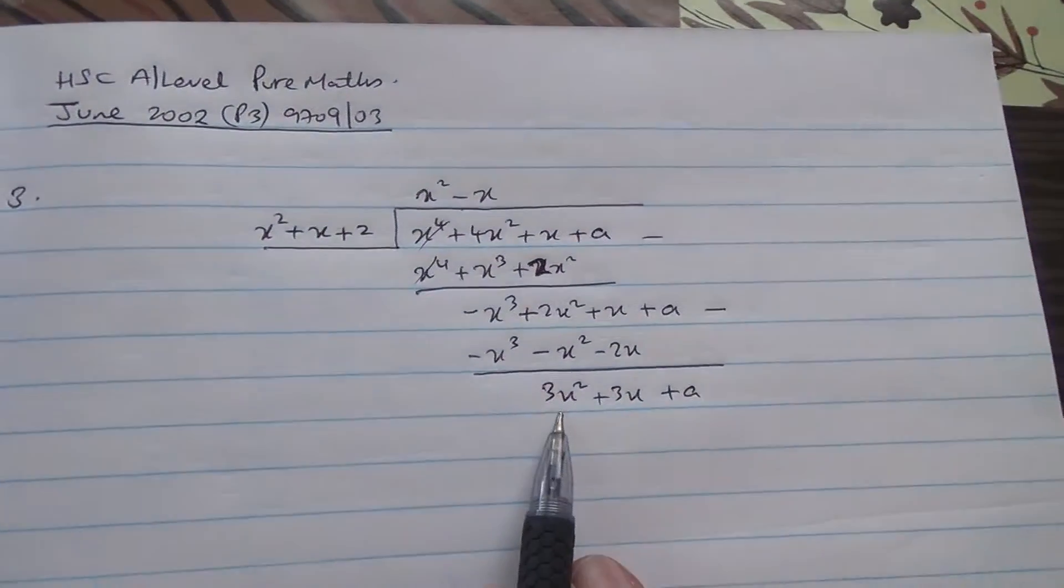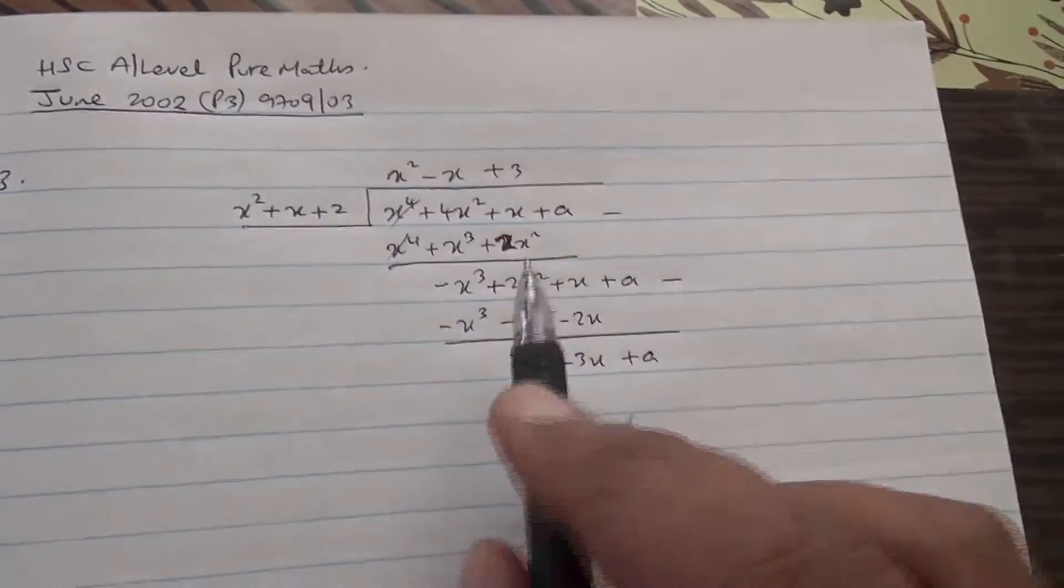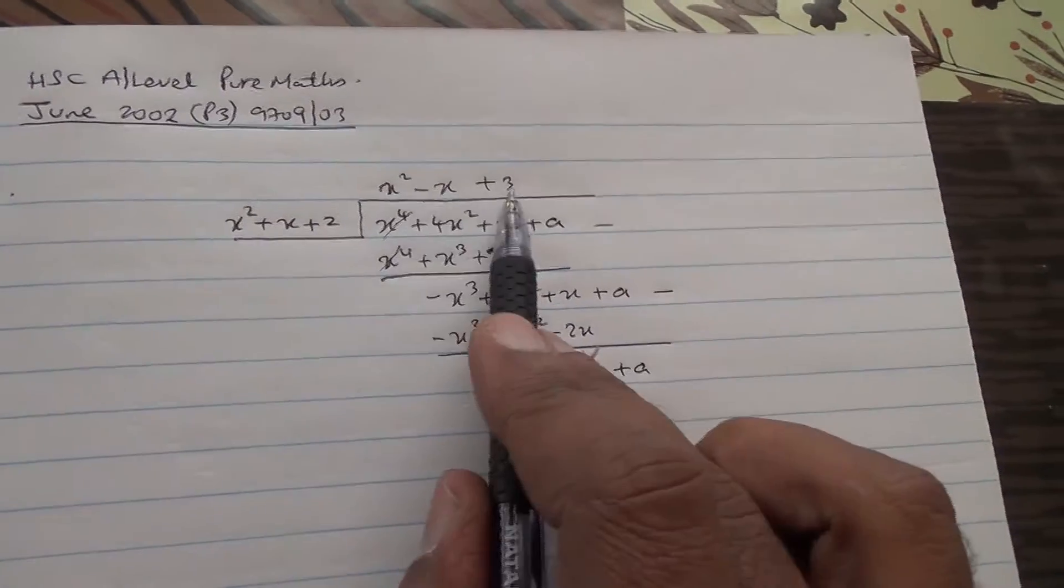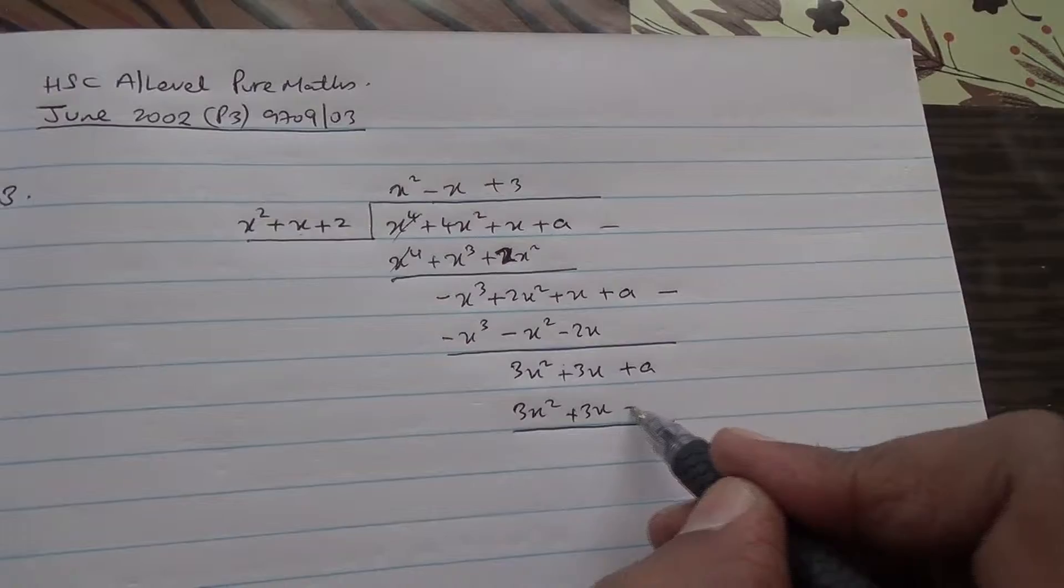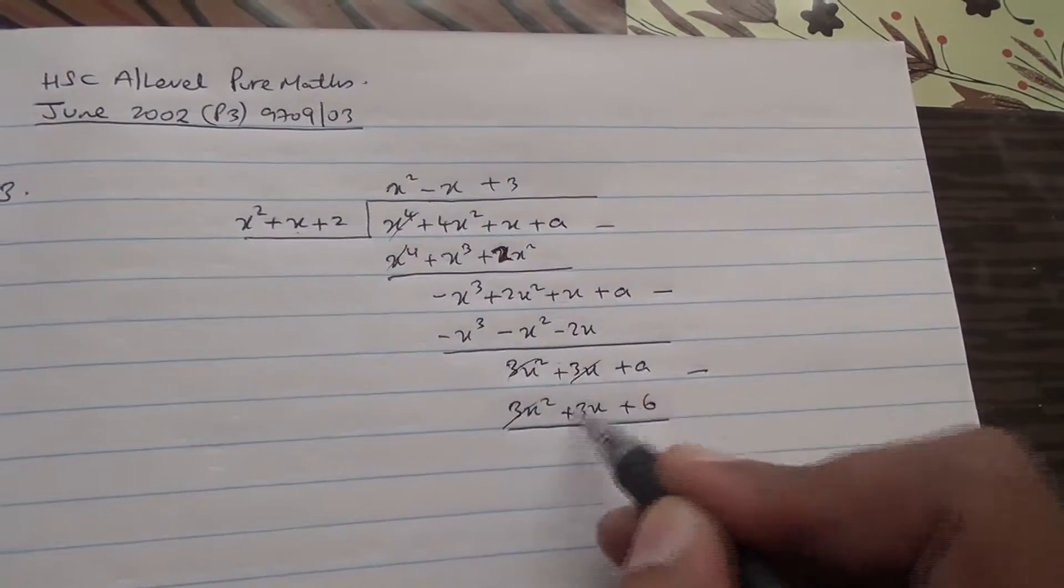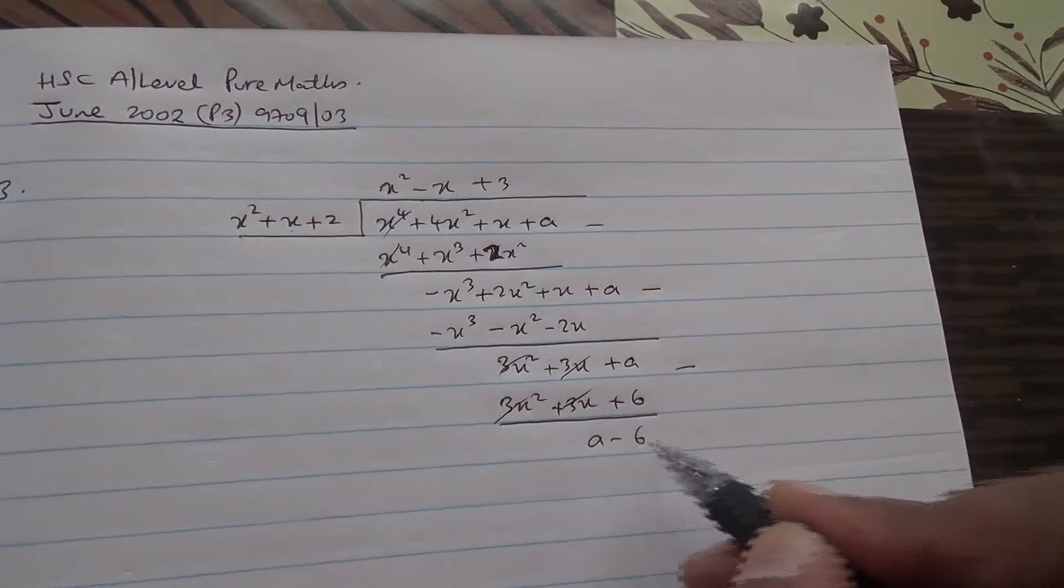Now we got 3x squared divided by x squared, it's going to be plus 3. So 3 times x squared is 3x squared. 3 times x is 3x. 3 times 2 is 6. Subtract that. All these cancels out. A plus 6. So A plus minus is A minus 6. That's the remainder.